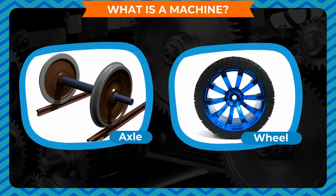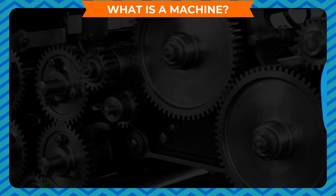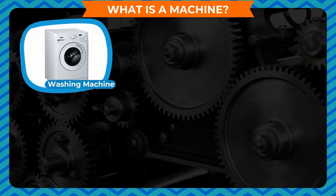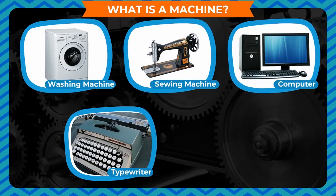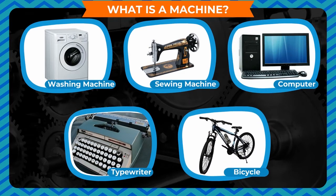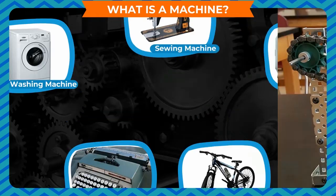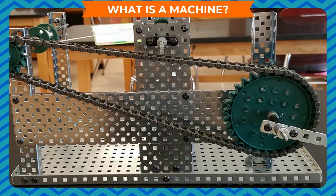Complex machines have many parts and are made up of a number of simple machines. Washing machine, sewing machine, computer, typewriter, bicycle, etc. are complex machines. These machines are usually powered by mechanical, electrical, or chemical energy. They are also called compound machines.